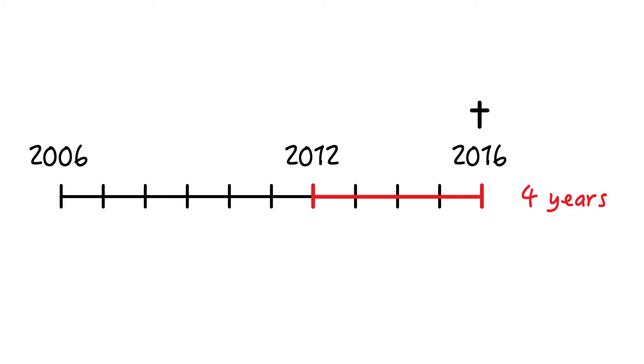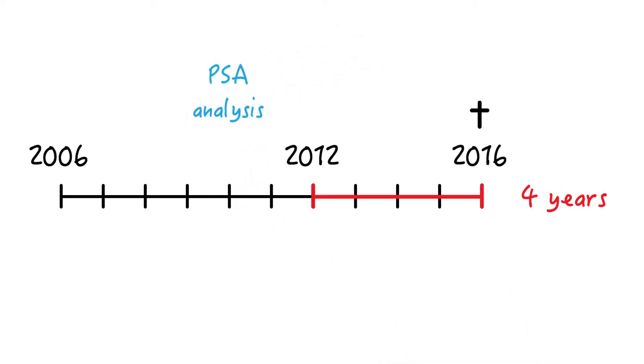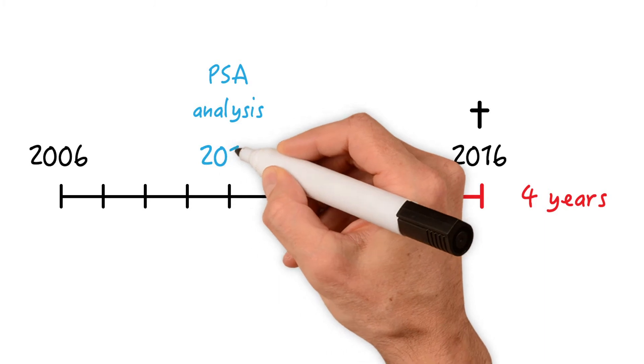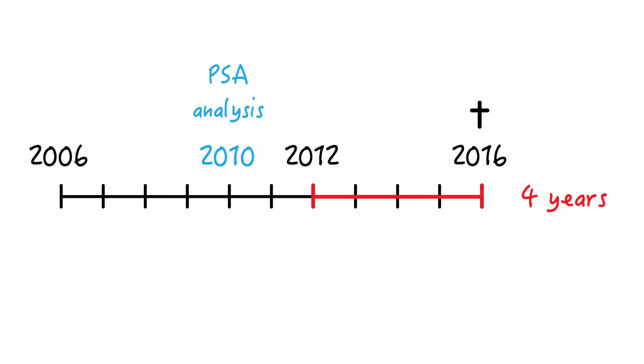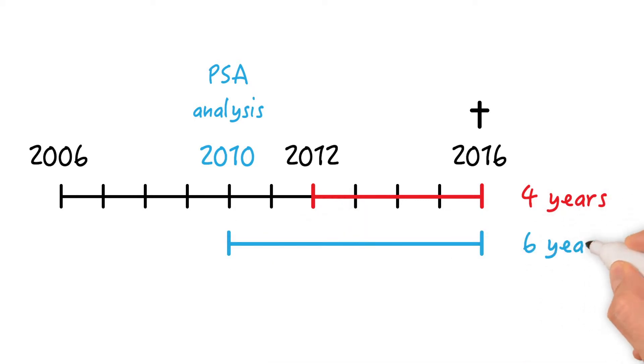Now, let's assume that in 2010, men were aggressively screened for prostate cancer with PSA analyses in this community. And let's say his cancer was picked up earlier by the screening initiative in 2010. Now, even without any improvements with respect to treatment, the same patient would now live for 6 years after diagnosis, and he'd be counted as a survivor and not as a death in the same 5-year survival analysis.